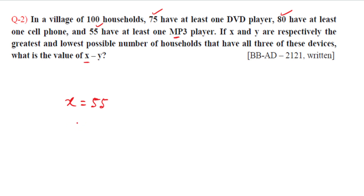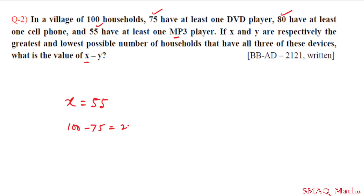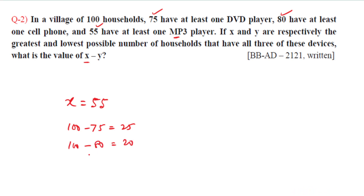We are going to calculate the complements. DVD not owned: 100 minus 75 equals 25. Cell phone not owned: 100 minus 80 equals 20. MP3 not owned: 100 minus 55 equals 45.